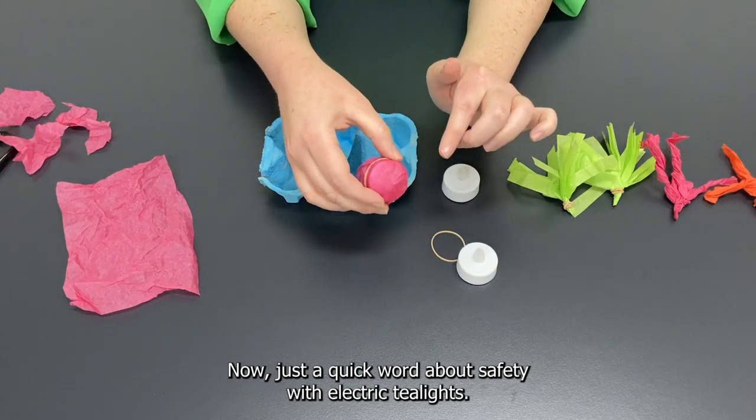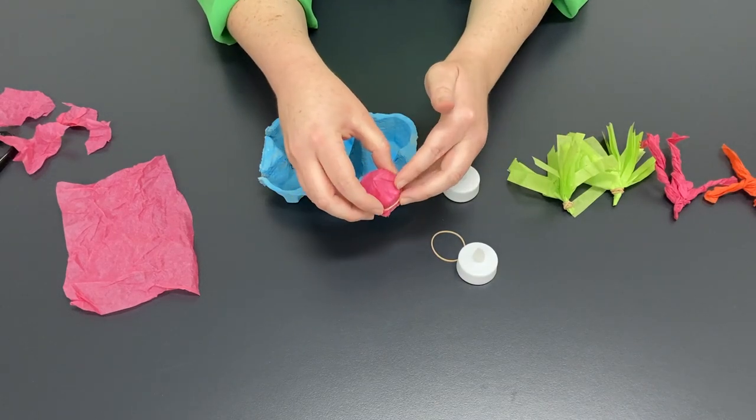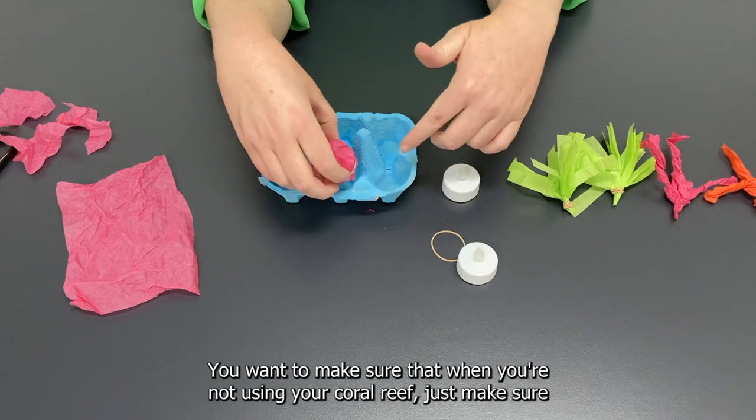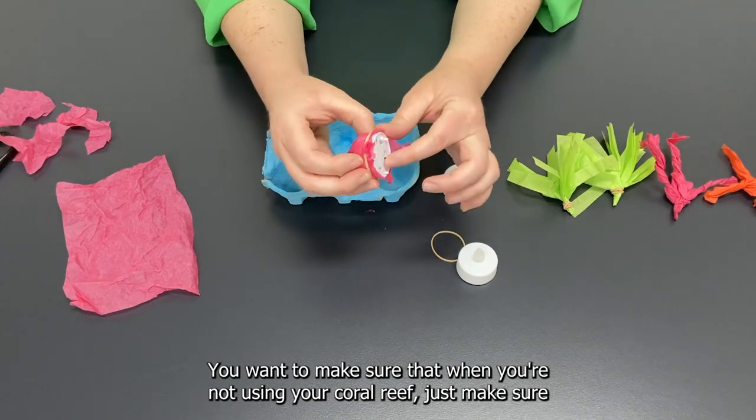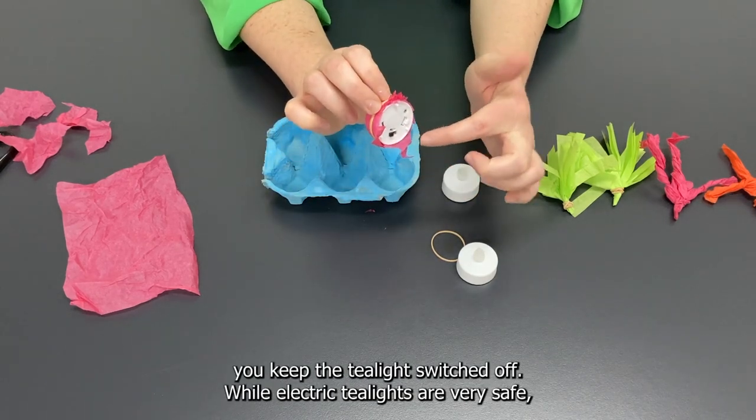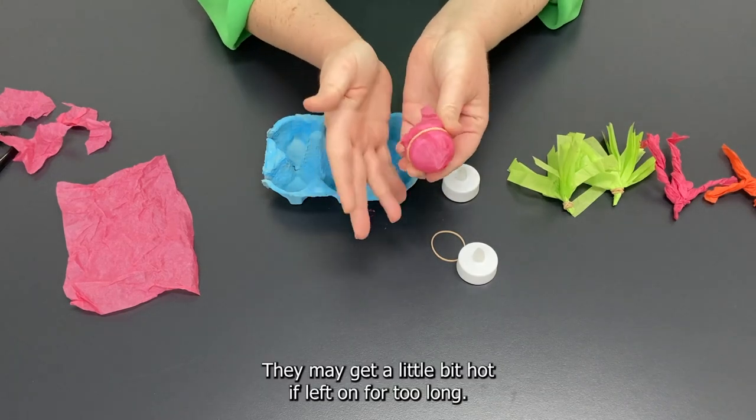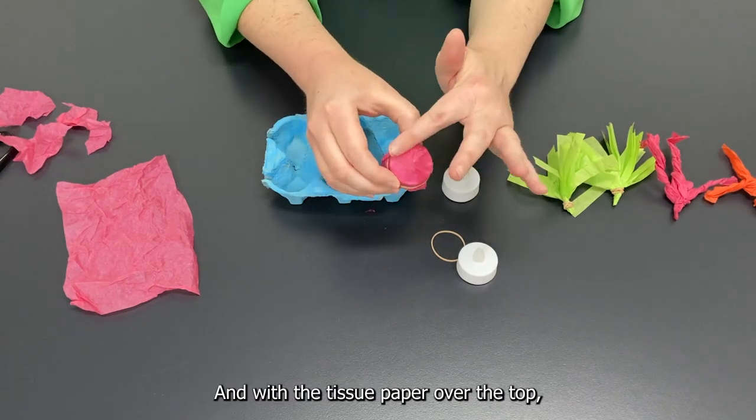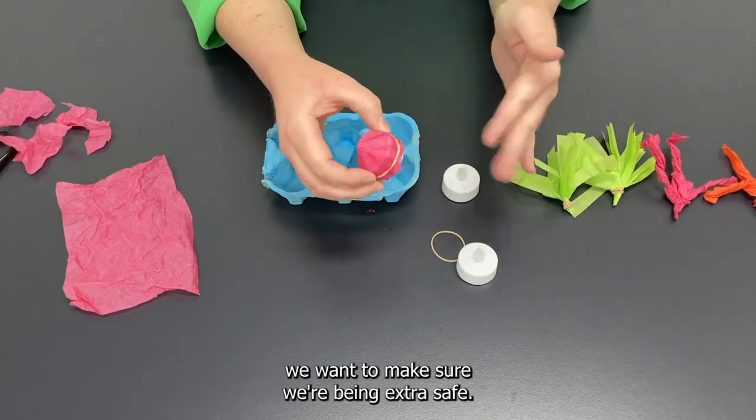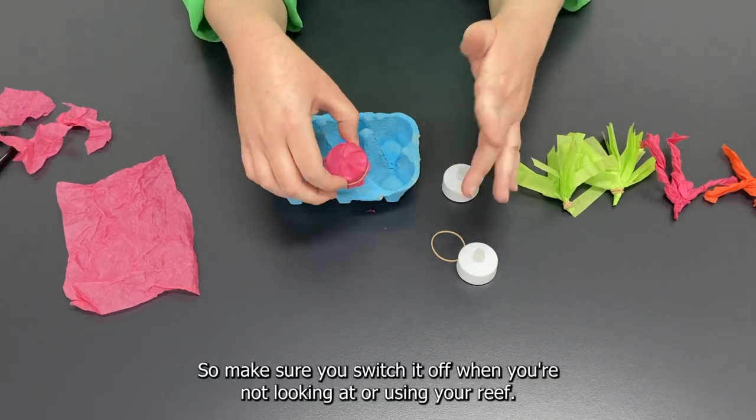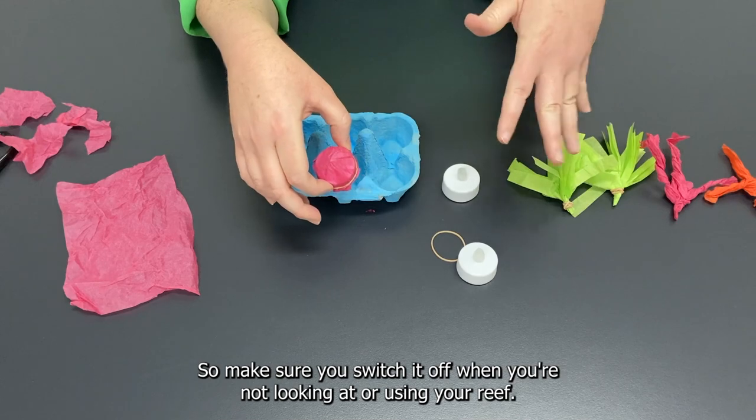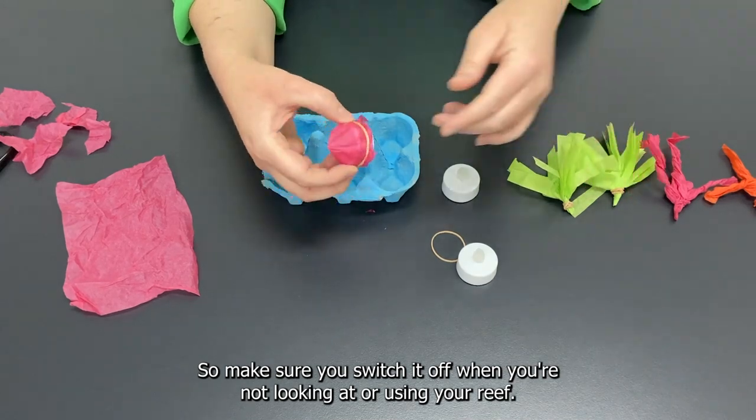Now just a quick word about safety with electric tea lights. You want to make sure that when you're not using your coral reef just make sure you keep the tea light switched off. While electric tea lights are very safe they may get a little bit hot if left on for too long and with the tissue paper over the top we want to make sure we're being extra safe. So make sure you switch it off when you're not looking at or using your reef.